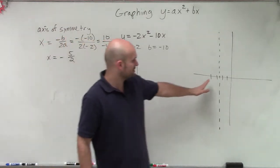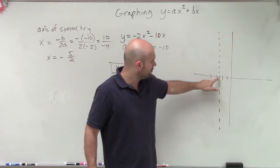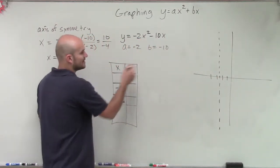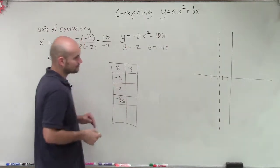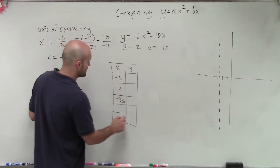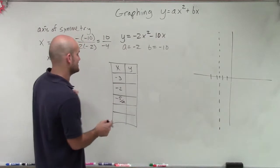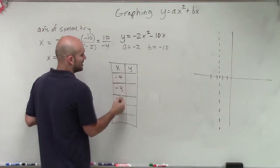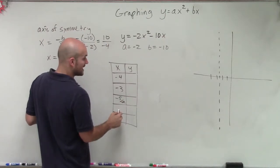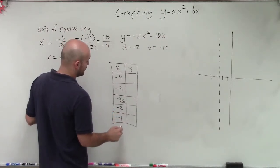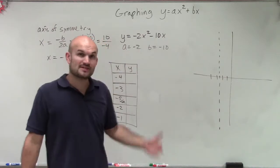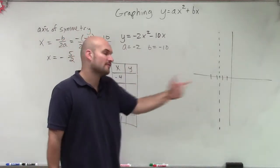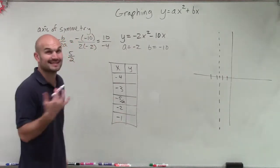Let's pick points to the left and to the right. A point to the left would be negative 3 and negative 4, and points to the right would be negative 2 and negative 1. We can find the values for all these points, or we can find just two points to the left and then use our axis of symmetry to reflect them over. That's what I'm going to do, because it's a lot less math.